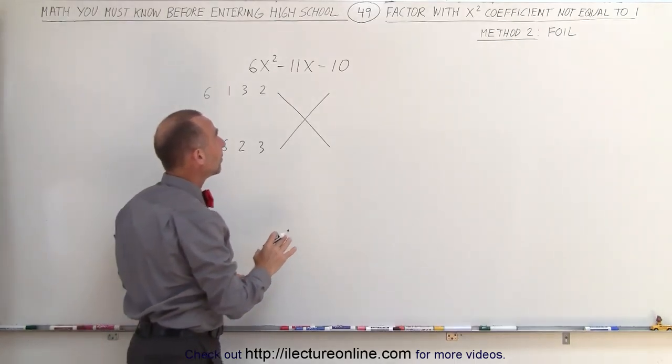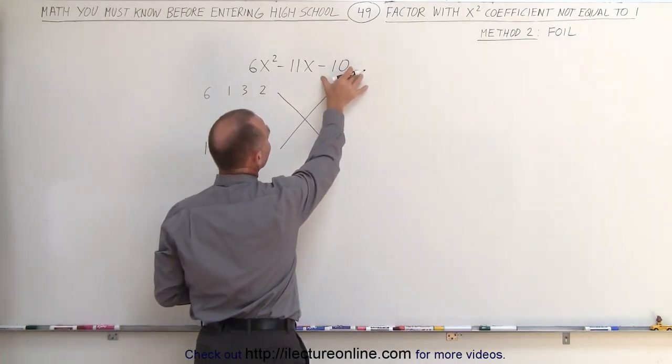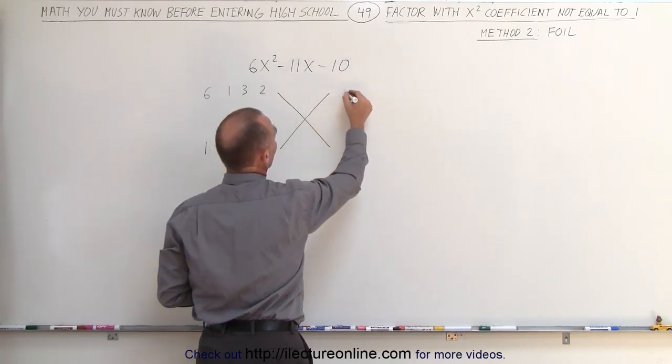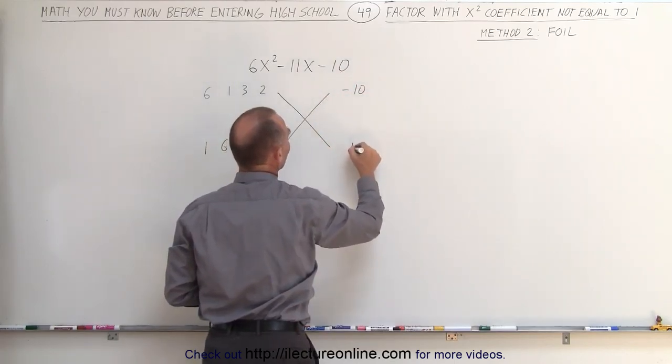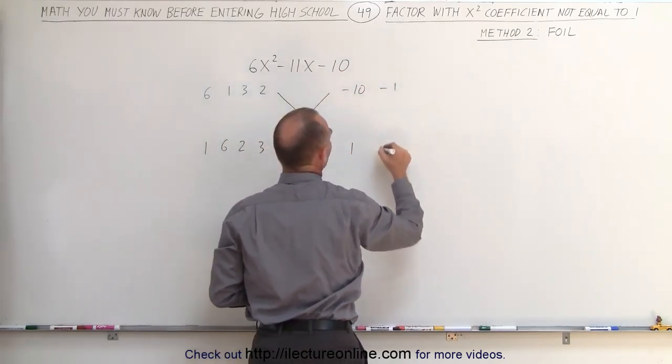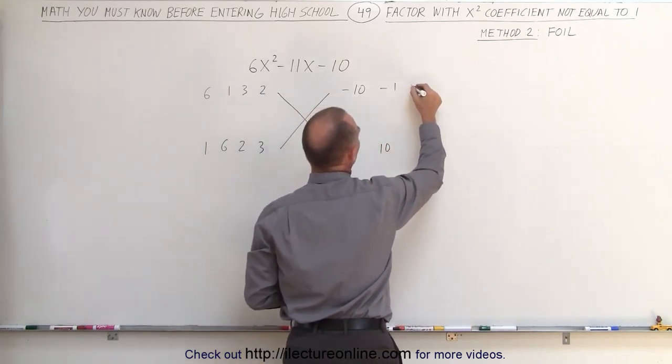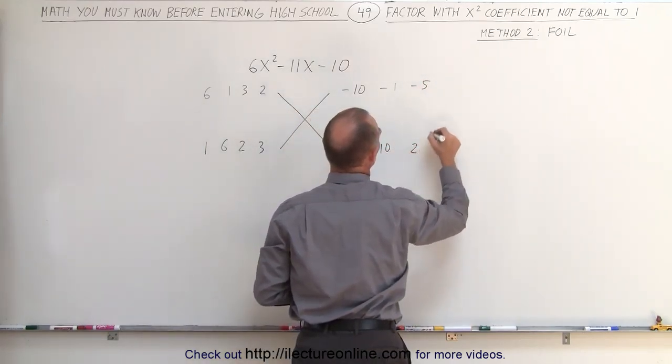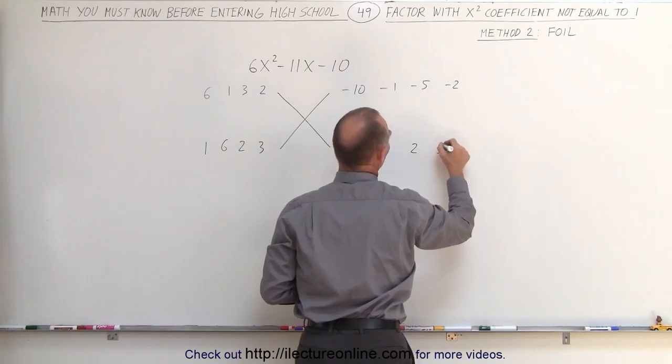On the right side we're going to do the same thing. We need two numbers when we multiply together we get a negative 10, which means negative 10 times 1, or negative 1 times 10, or negative 5 times 2, or negative 2 times 5.